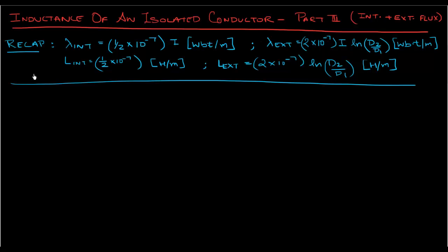Now let's do a quick recap of what we've seen in the earlier two videos. In the very first part we derived the formulation for flux linkages due to internal flux — that was 1/2 times 10 to the power minus 7 times i. Since inductance is flux linkages over current, we got the inductance due to internal flux as 1/2 times 10 to the power minus 7.